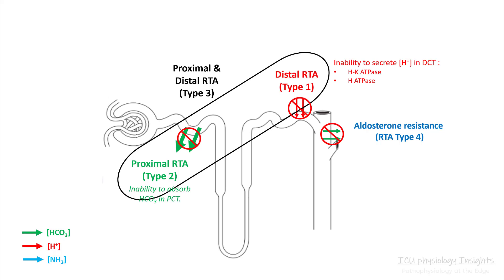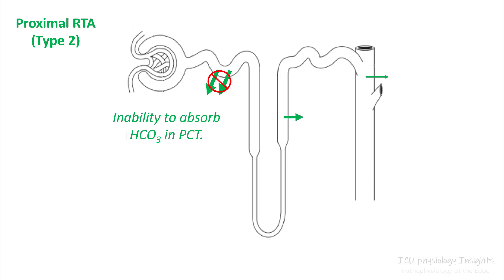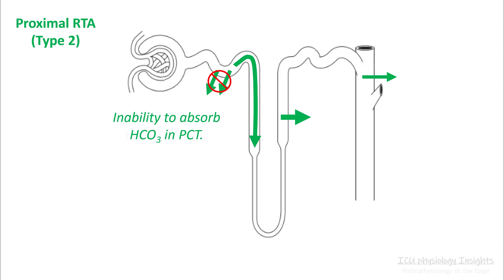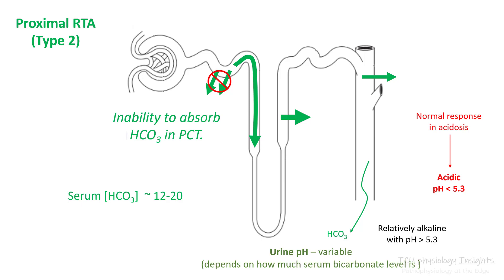RTA type 3 is a combination of proximal and distal RTAs. Proximal RTA is the inability to absorb bicarb in the proximal convoluted tubule. When this happens, a lot of bicarb and sodium ions reach the distal convoluted tubule and collecting duct, and your body ramps up absorption the best it can. However, you will still lose quite a bit of bicarb in the urine and your serum bicarb will fall. In a normal person, the response to metabolic acidosis is making acidic urine, but in these cases, since you are losing bicarb, your urine pH will be relatively alkaline — usually more than 5.3. However, the urine pH will be variable.